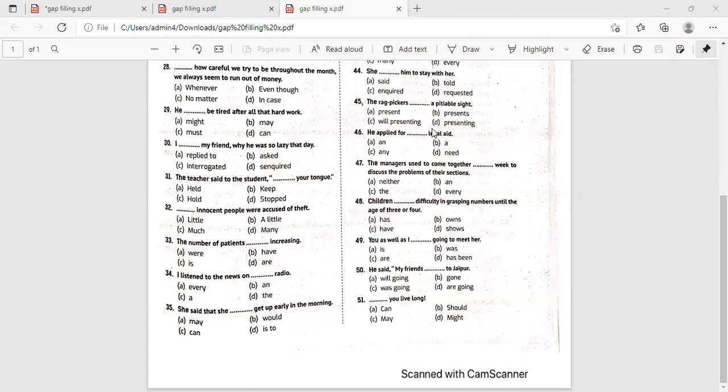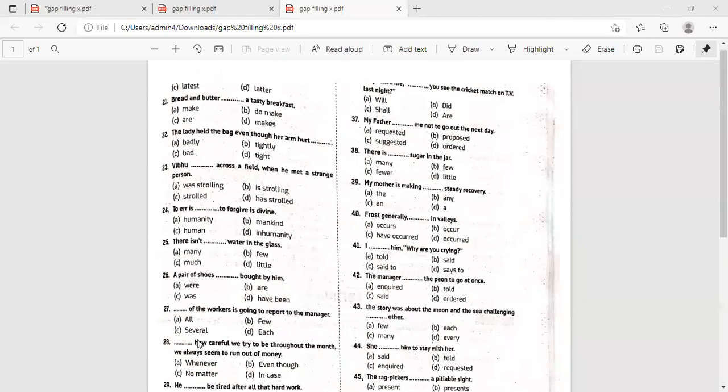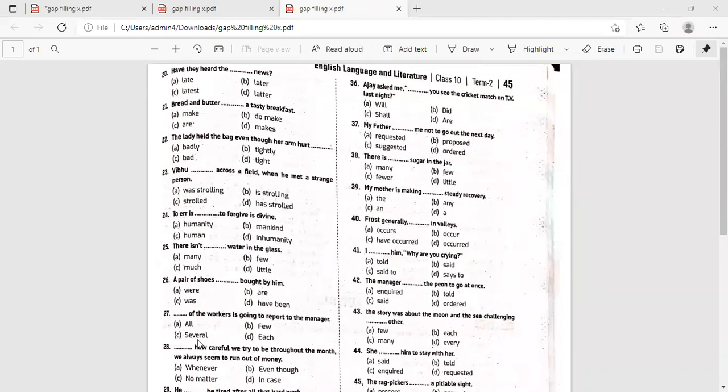She said that she get up early in the morning. She may get up, it's a possibility. Can is ability. Would get up early in the morning, something to express what is going to happen. What about can? Can is more appropriate. She can get up, it's a habit here, an ability to do so.